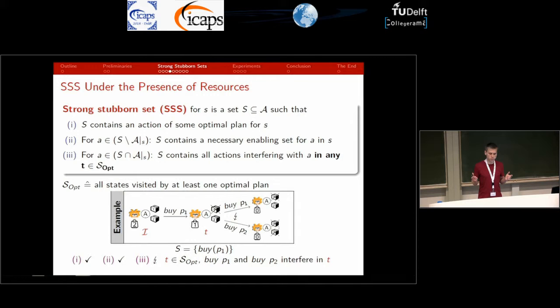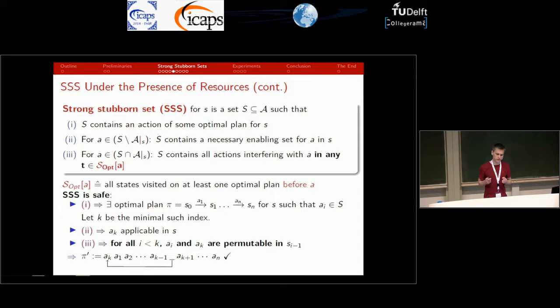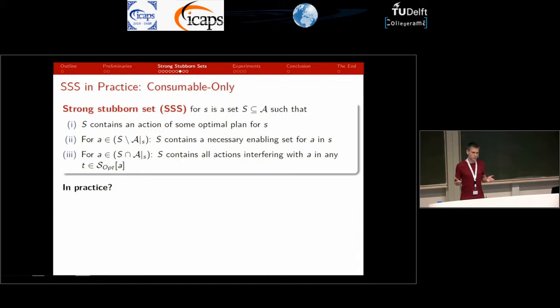The exact reason for this loss of pruning is an over-restrictive requirement in condition three, which considers all states in the optimal plan. But going back to the proof, we actually use condition three only to show that AK does not interfere with any of its preceding actions in any of its preceding states. So we can weaken condition three by only taking into account states that actually precede the considered actions. In the example, state T does not precede buy P1 in any optimal plan, so it does not matter whether buy P1 and buy P2 interfere there. The set will also be a strong stubborn set according to this modified definition.